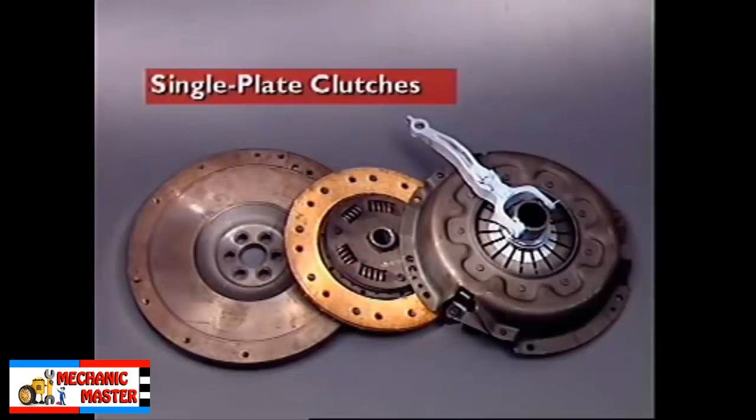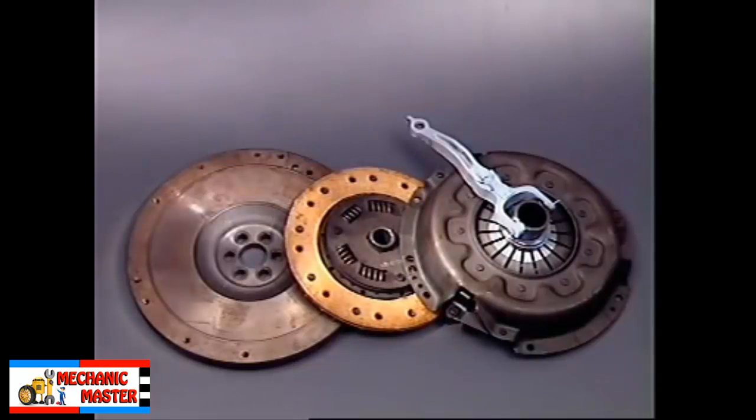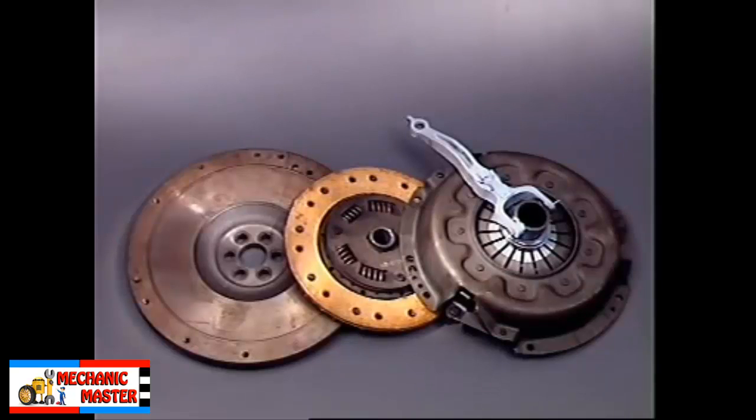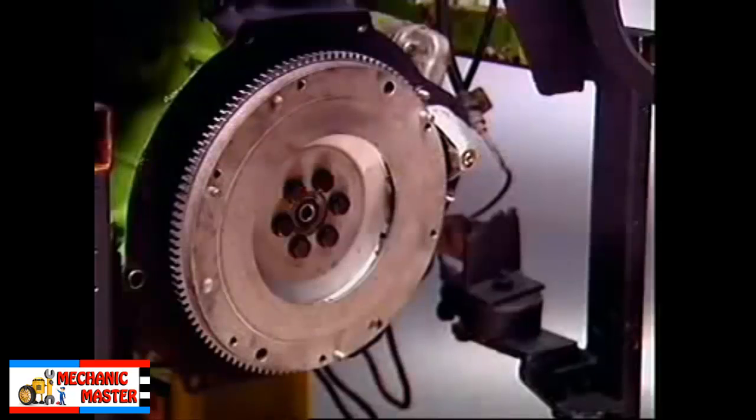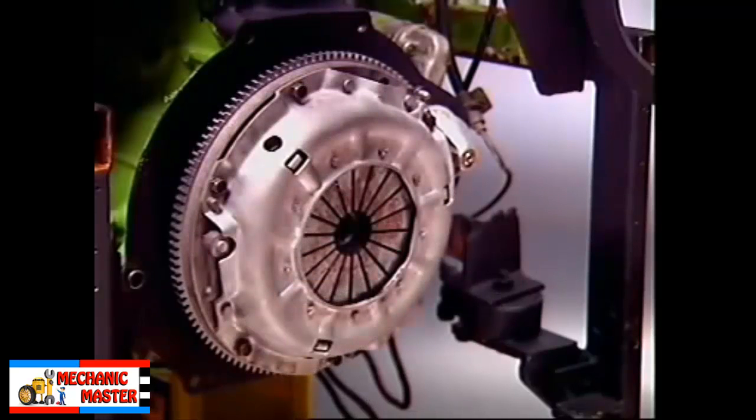Most light vehicles use a single plate clutch to transmit torque from the engine to the transmission input shaft. The flywheel is the clutch driving member. The clutch unit is mounted on the flywheel's machined rear face so that the unit rotates with the flywheel.